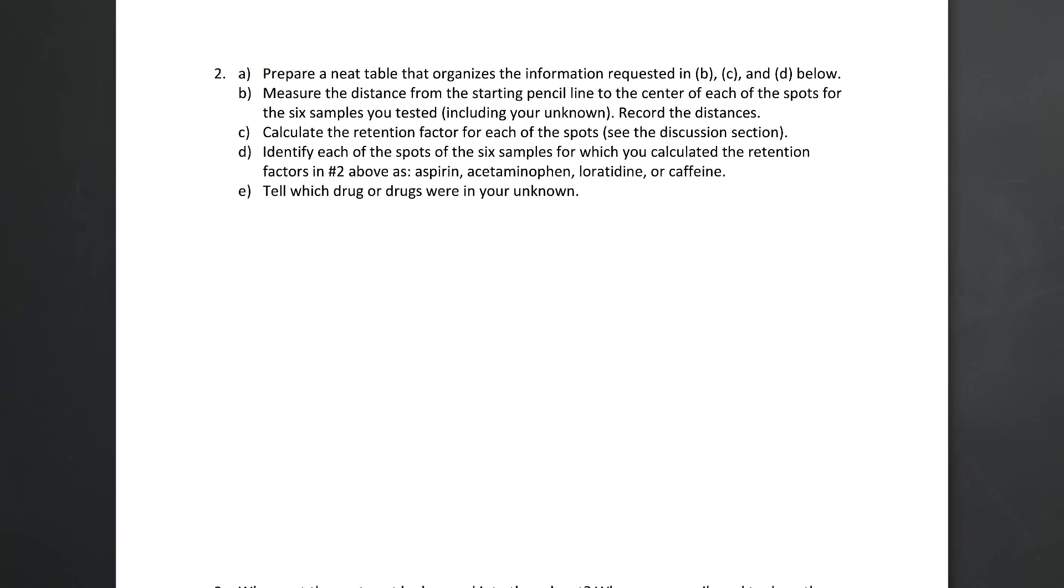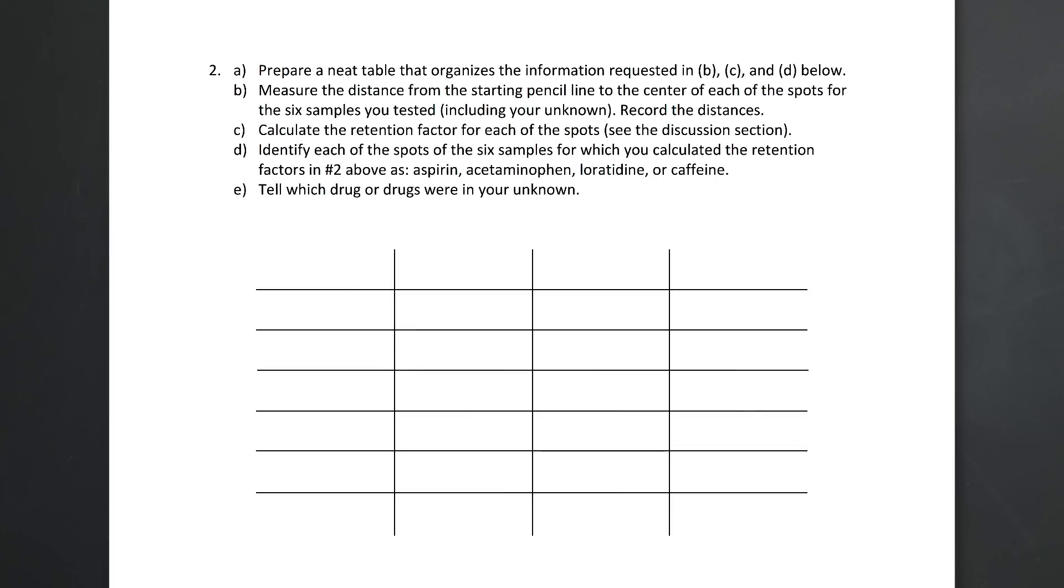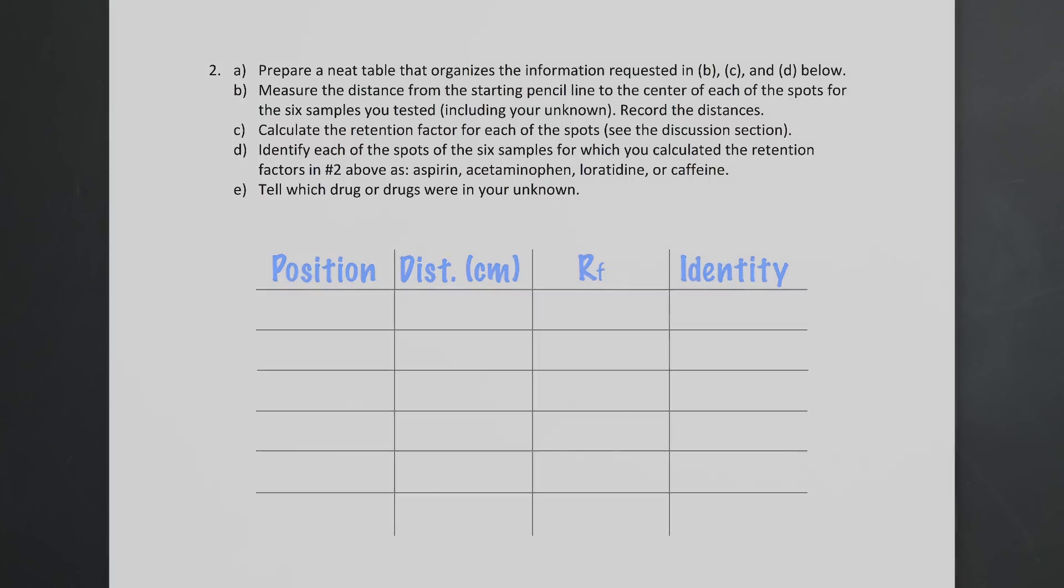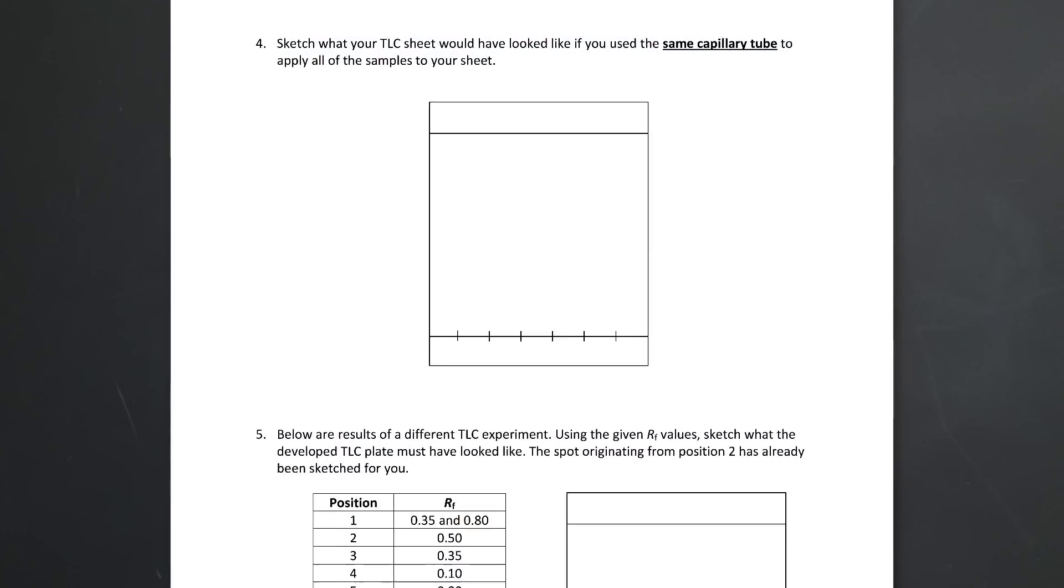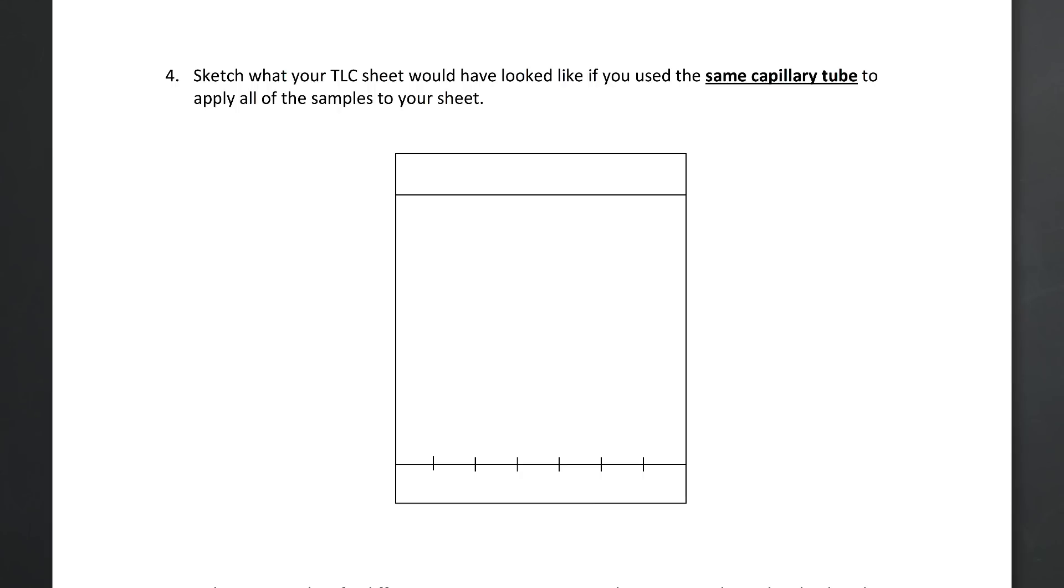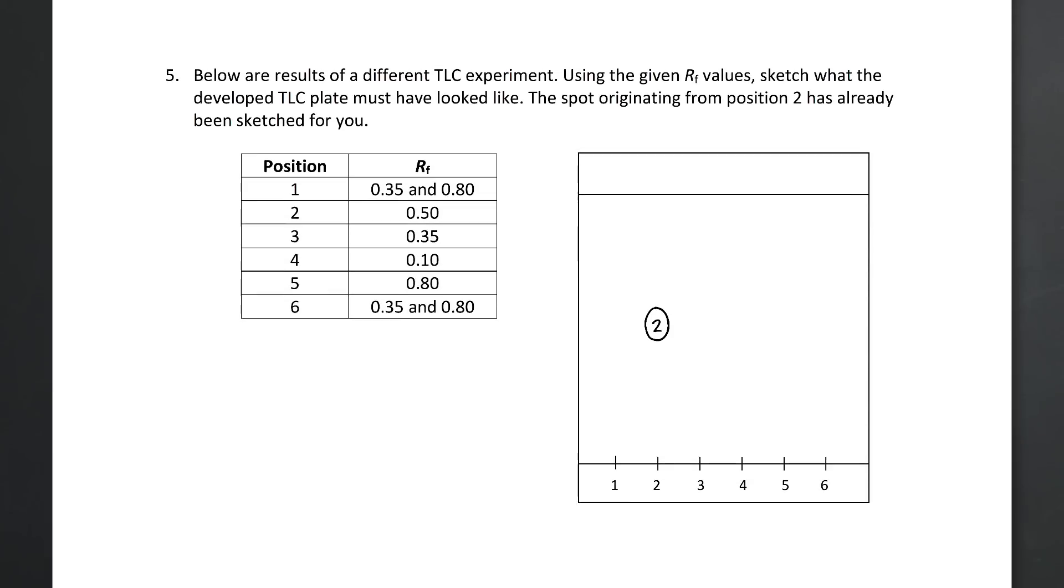On the Data page, make a neat table with rows and columns that organizes your data. Include the starting position, the distance to the spots, the RF, and the identity of each spot in your unknown and known samples. You're also asked about what your sheet would look like if you mistakenly used the same capillary tube for all of your samples, and you're asked to draw what a developed TLC sheet would look like with data from a different TLC experiment.